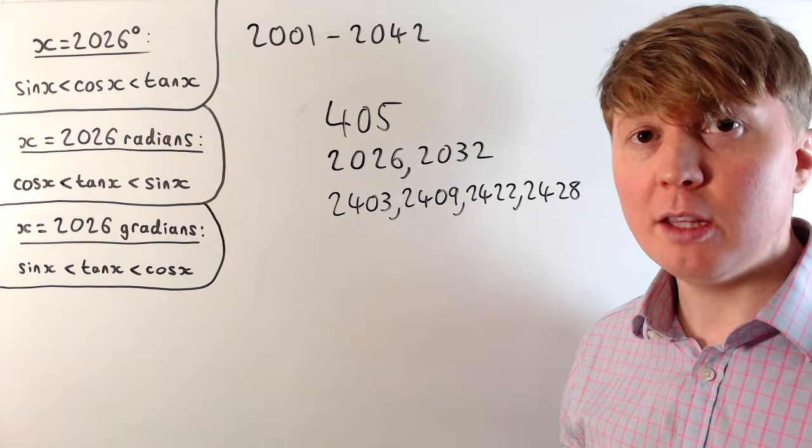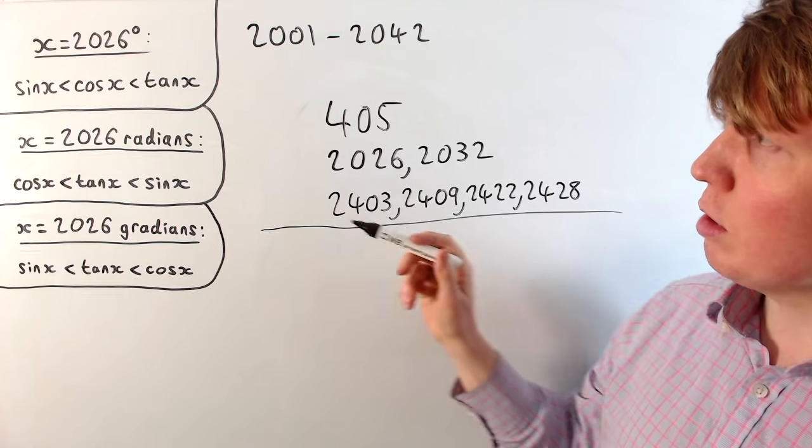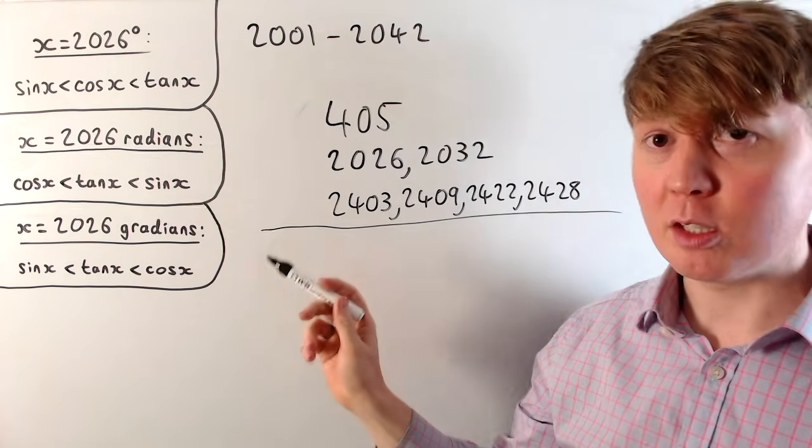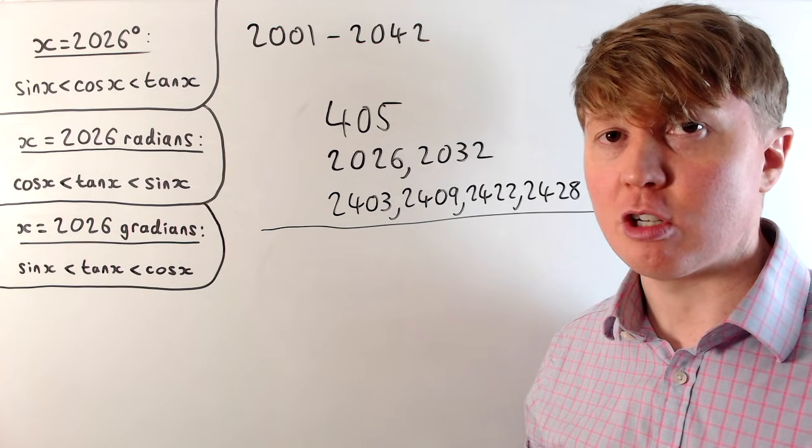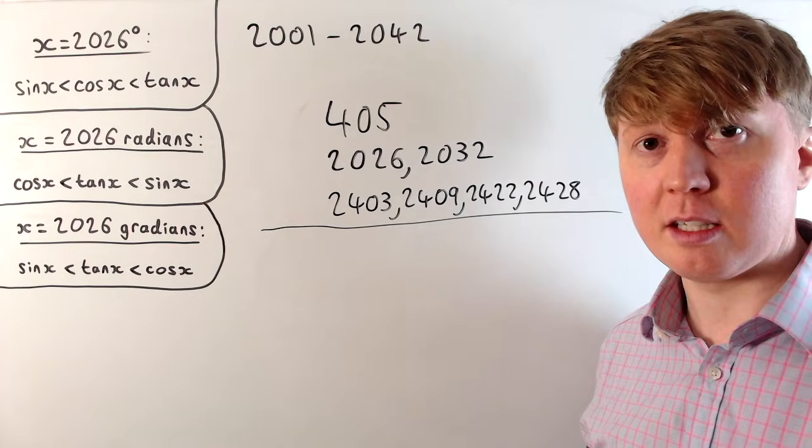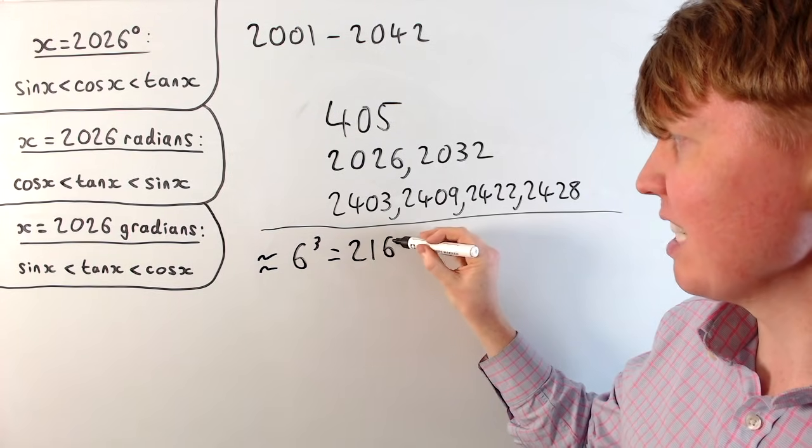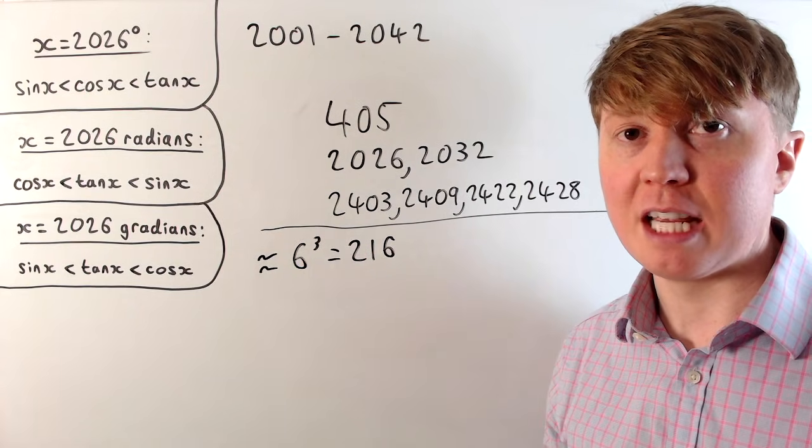We might actually find that quite surprising, given how few possible orderings there are. So if we think about this, considering the cases where there are strict inequalities, there are only six possibilities: sine, cos, tan; sine, tan, cos, etc. So we'd have six possibilities in degrees, six in radians, and six in gradians. So you'd expect to have around six cubed, or 216 possible combinations for these orders.